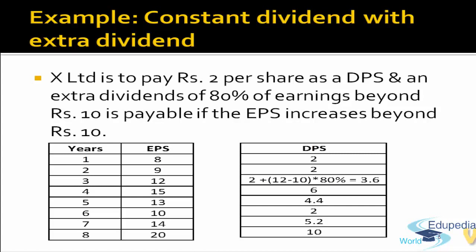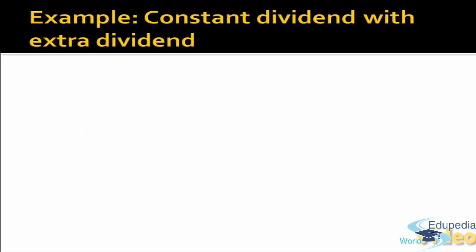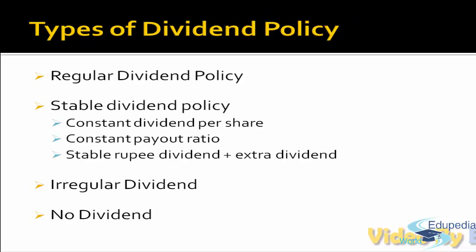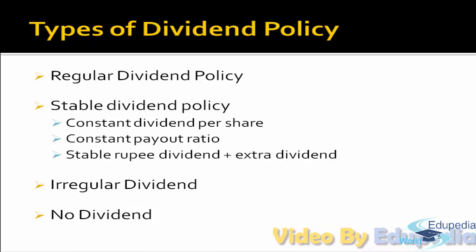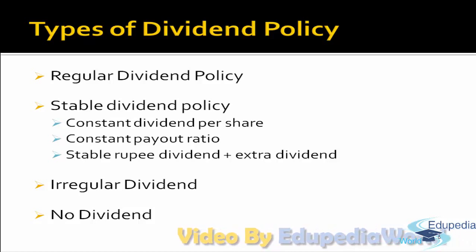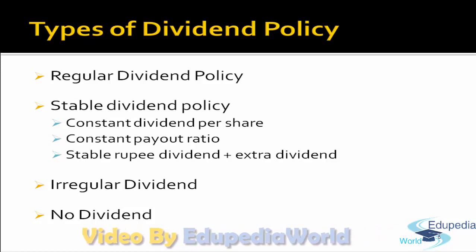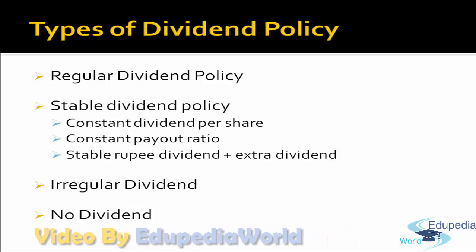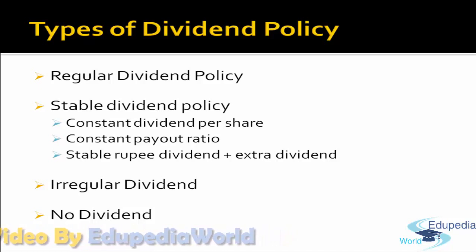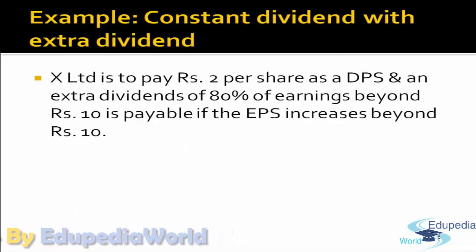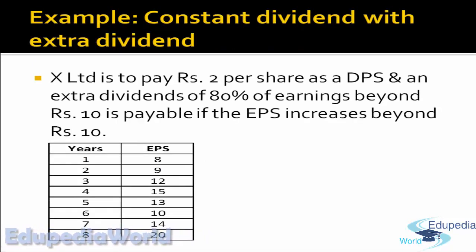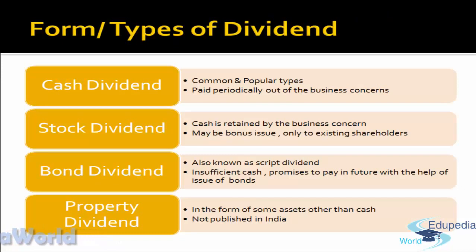The other two dividend policies are irregular dividend and no dividend. In irregular dividend, the company does not pay any regular dividend to shareholders because earnings are uncertain — whenever the company has a surplus it declares dividend, otherwise it does not. A demerit of this is that shareholders lose confidence and it indicates the company is not running very successfully because there is no stability in earnings. The last policy is no dividend — as the name suggests, the company does not declare any dividend at all. This is generally practiced when the company is at growth stage.